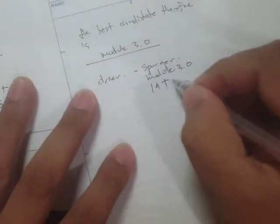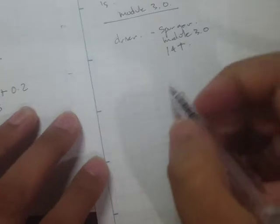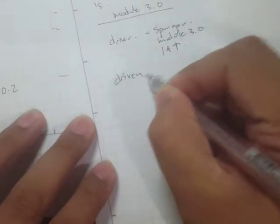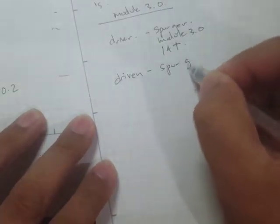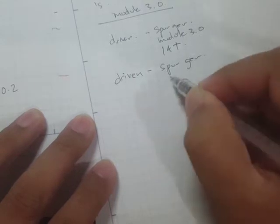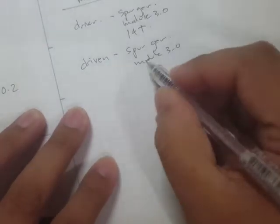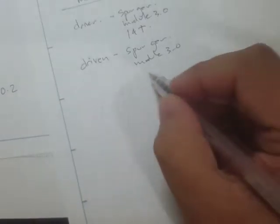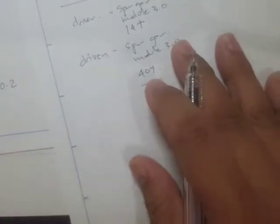The driver has 14 teeth. For the driven, we also have a spur gear, module 3.0, with 40 teeth. However, we need to check for interference first.